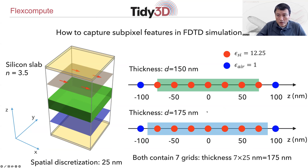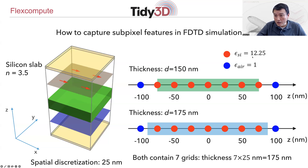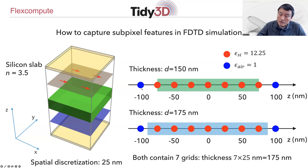In the simplest algorithm, what you would say is that you look at every single grid point — these are electric field grid points. And you say if the electric field grid point is in the dielectric slab, then you assign it the dielectric constant of the slab, for example in this case silicon at 12.25. And if it is outside, as indicated by the blue one, then you put the dielectric constant to be air, which is 1.